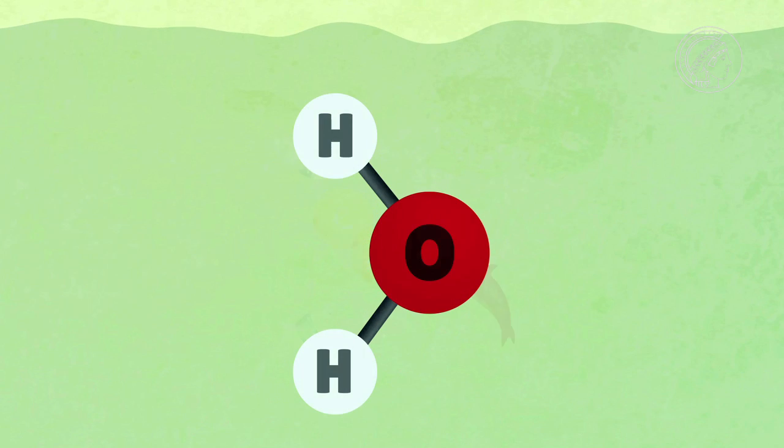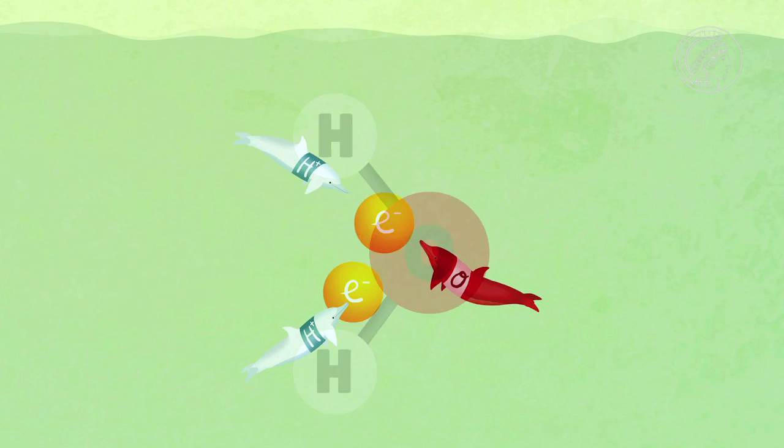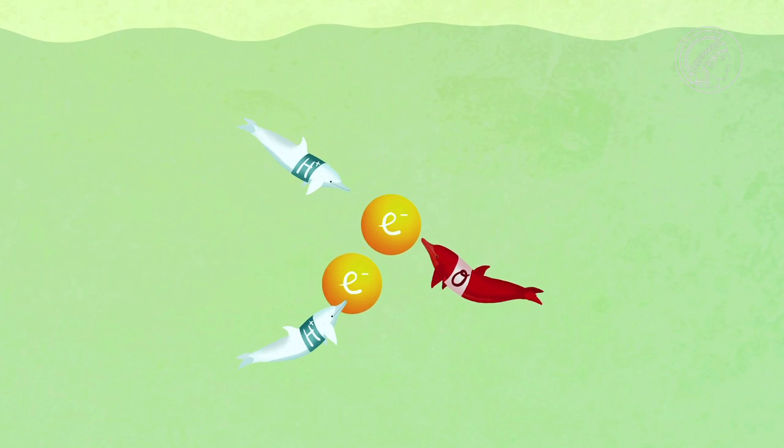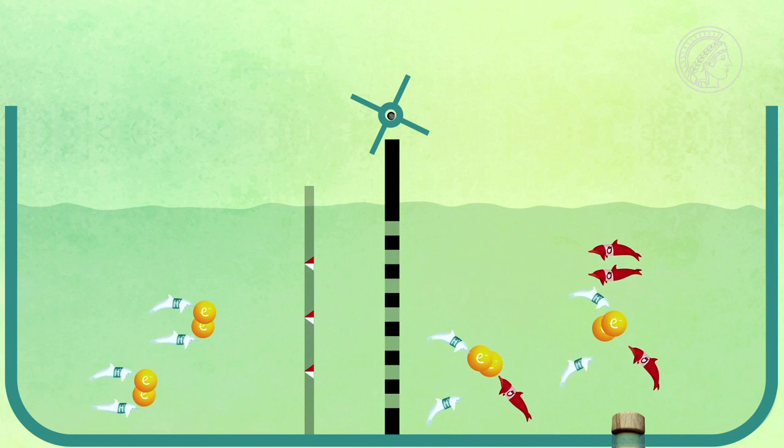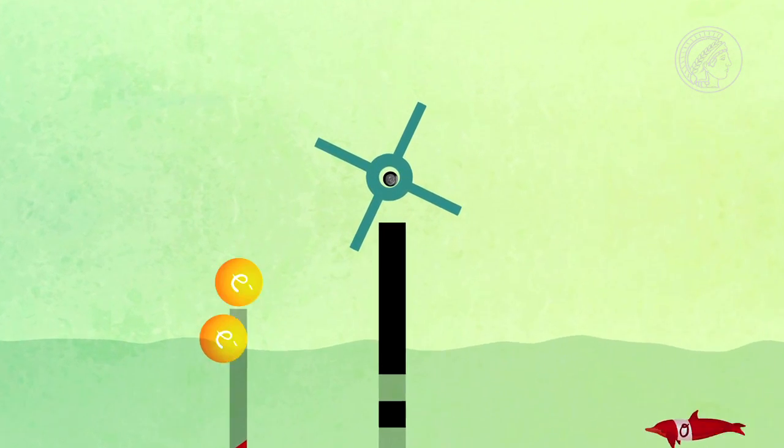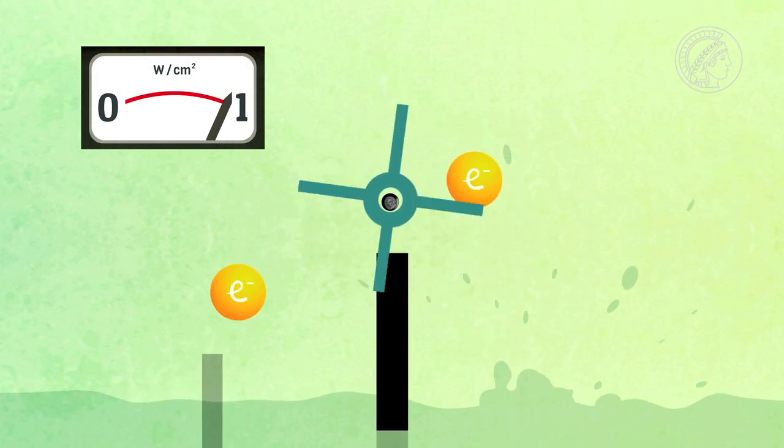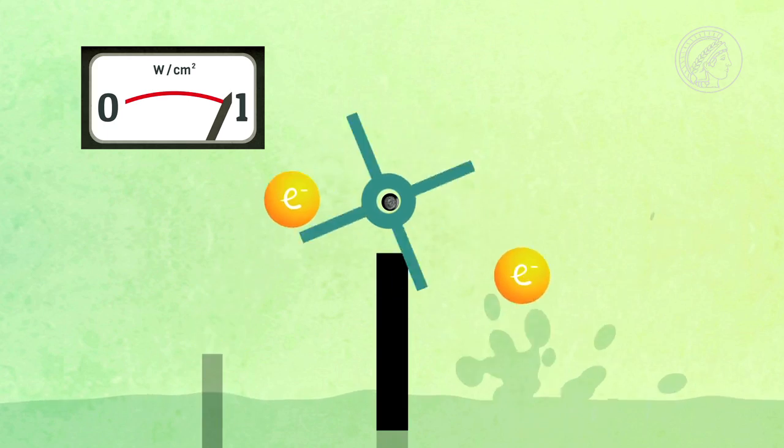The trick in this process is that the electrons are forced to make a detour, and this flow of electrons is electrical power—power that can be put to use. So that's the principle.